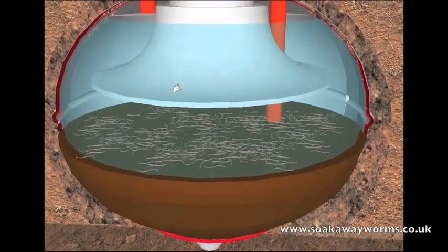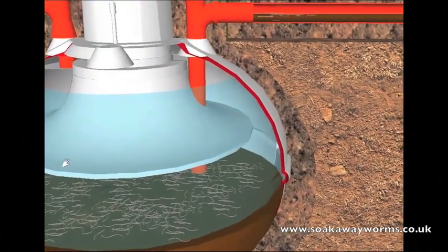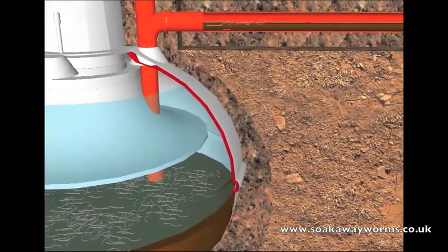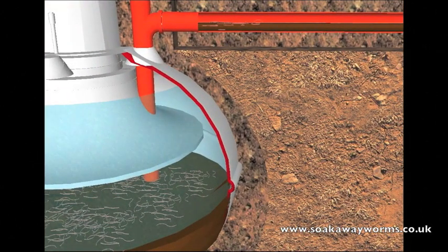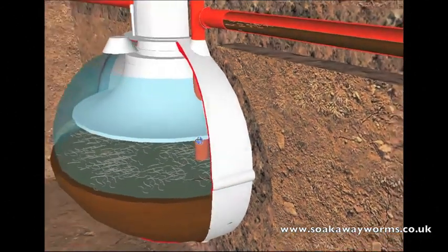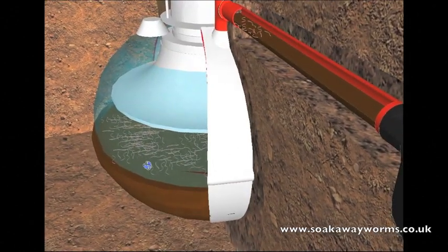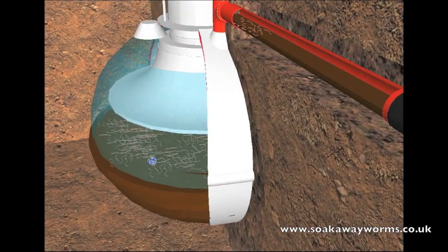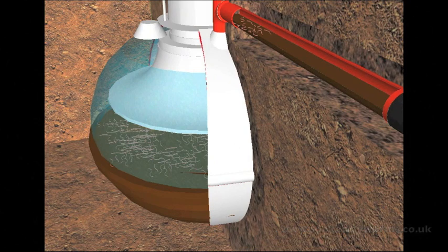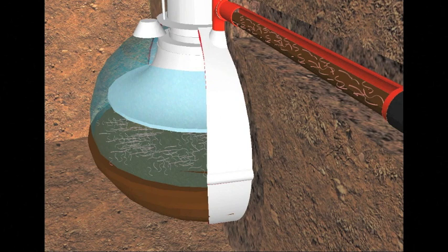This process generally takes about two to three weeks, during which time the soakaway worms will make their way from the bottom of the septic tank up through the outlet pipe. The process continues as they continue to eat, breed and multiply over time, making their way from the septic tank towards your soakaway.